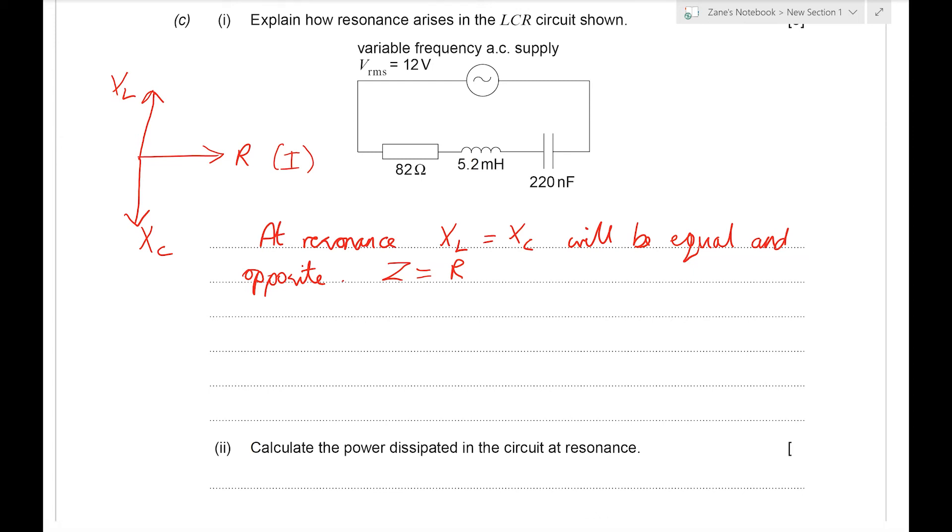So at a certain frequency, remember that X_L is ωL and X_C is one over ωC. If those two are equal to each other we're going to get ωL is one over ωC, and ω will be the square root of, sorry one over the square root of LC. So at that particular angular frequency we're going to get resonance.